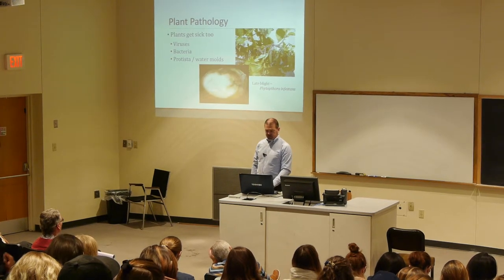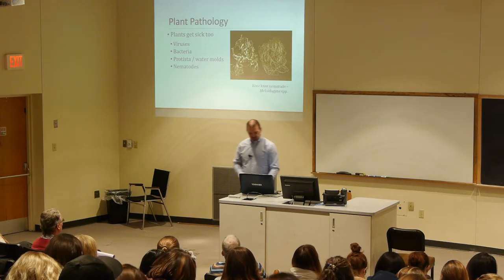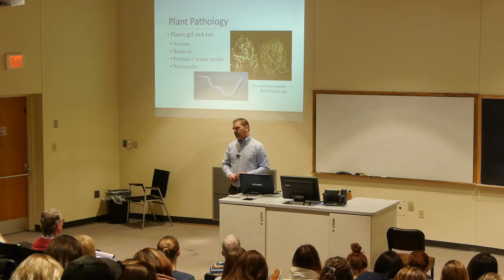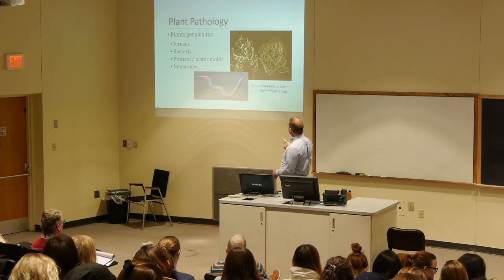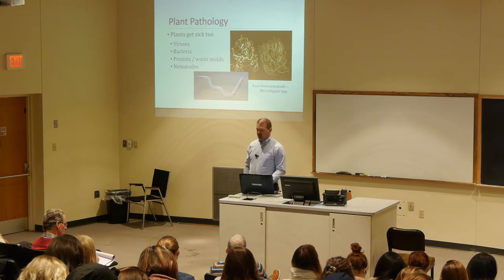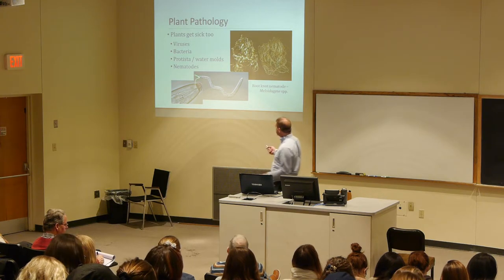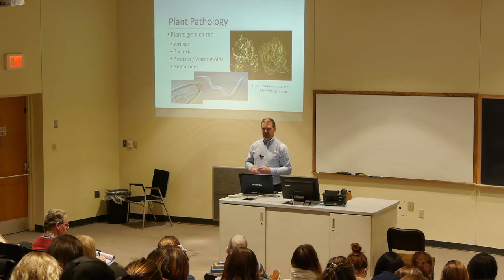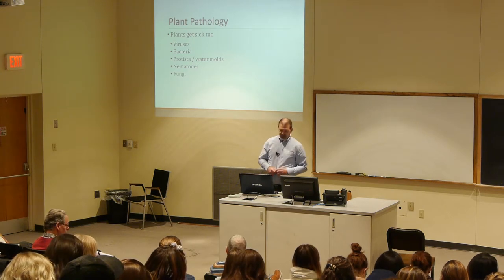Phytophthora infestans causes not only vine kill but necrosis in potato tubers. Then there are nematodes — little tiny worms, some microscopic, maybe 20 microns long and 5 microns wide. One causes root knot, producing knotted roots that stunt the plant so roots don't work properly. Parasitic plant nematodes have a stylet they use to pierce tissue, inject cell wall degrading enzymes, and extract nutrients.